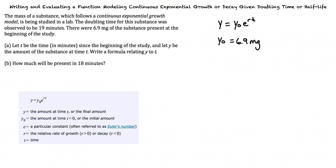Now e is just a constant, so we leave it as e. And next we need to find r. We are given a doubling time of 19 minutes for this substance. That means the time it takes for y to equal 2 times y sub 0. So we can substitute these values into the equation to solve for r.